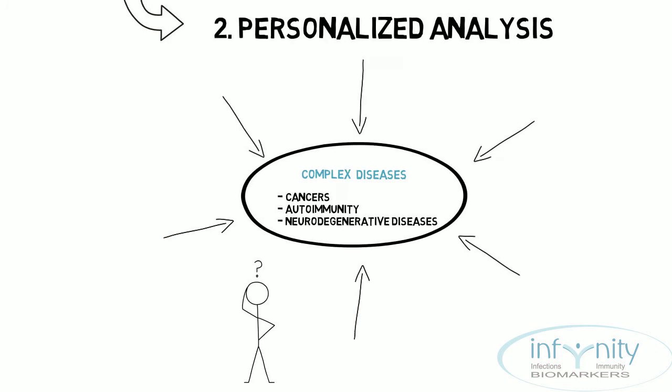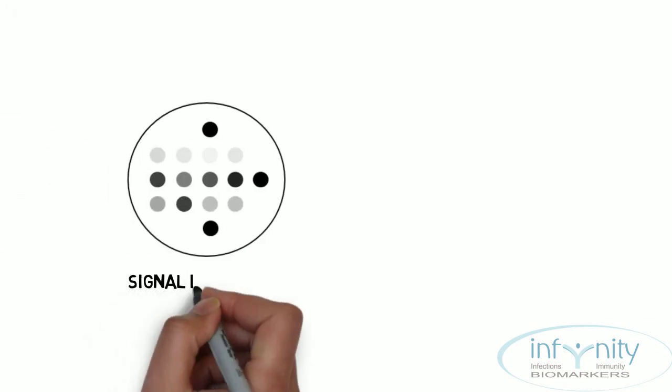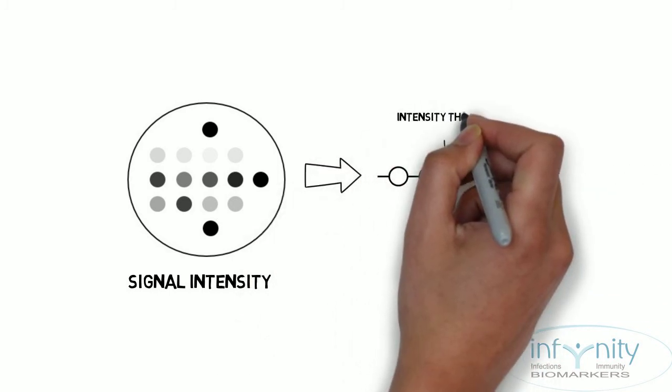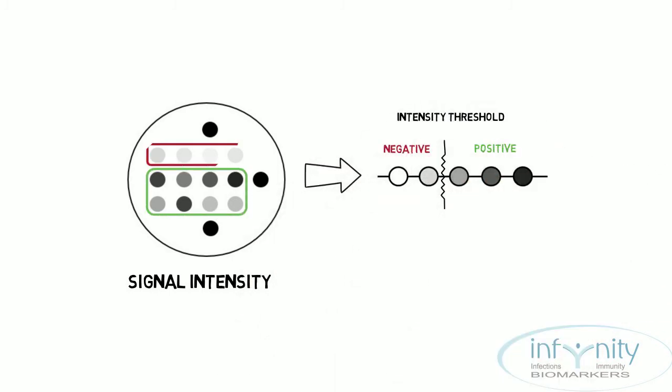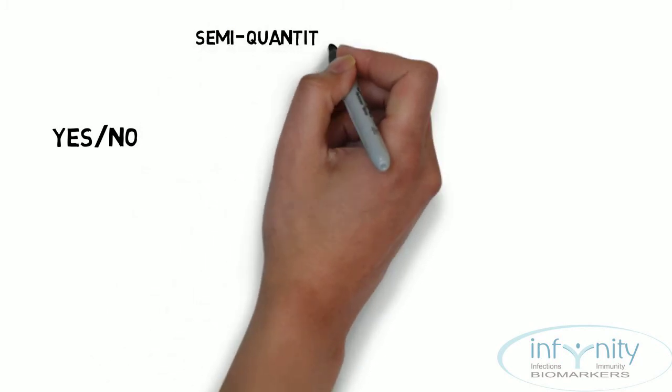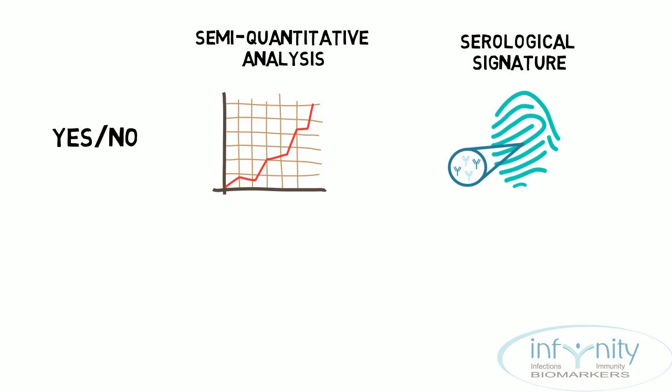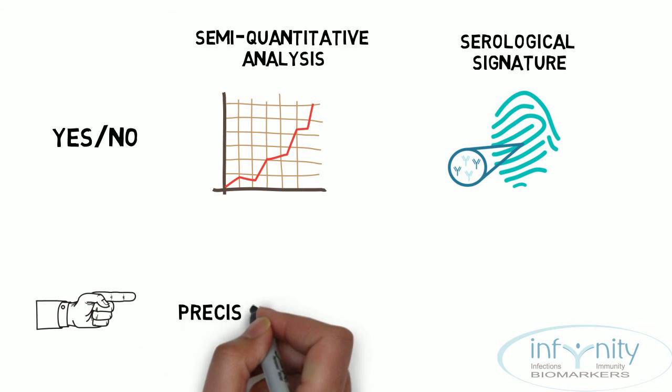To obtain the results, the generated signal intensity of each individual parameter can be compared with defined thresholds. This allows to make several conclusions as to say yes or no, make semi-quantitative analysis, or to assign a serological signature. The combination of visual and digital spot intensity and respective result analysis leads you to a precise interpretation.